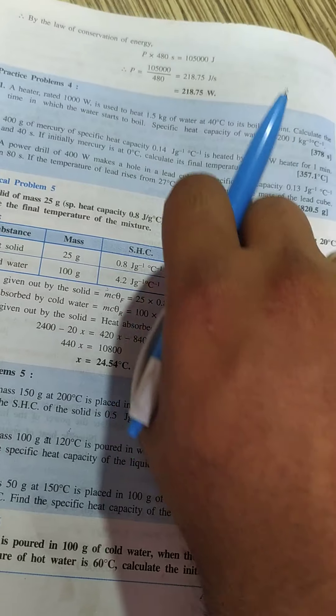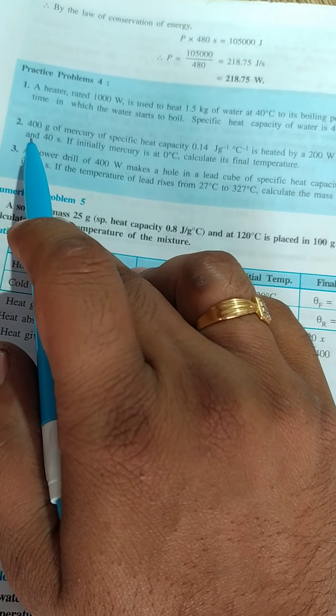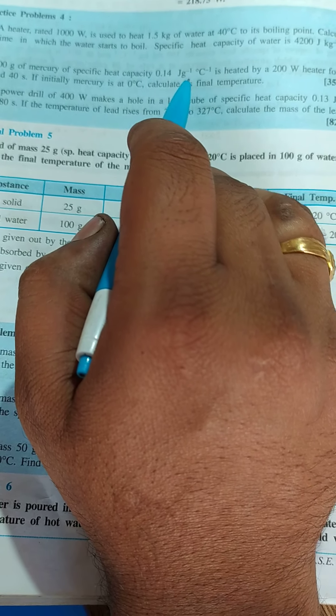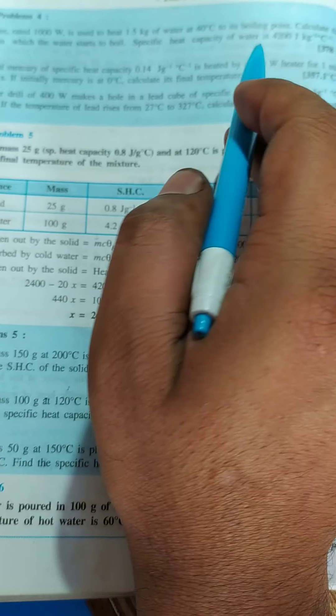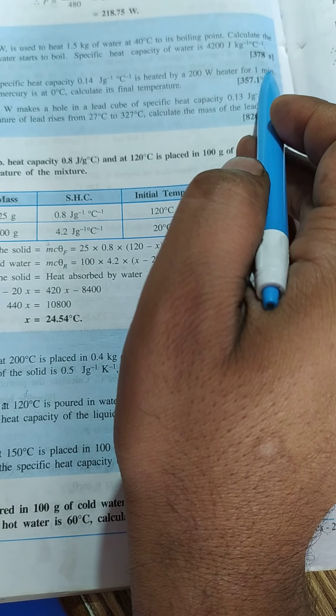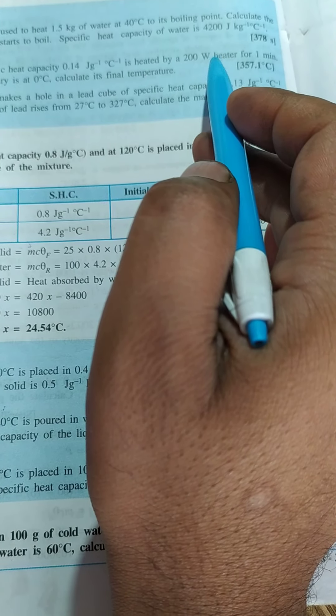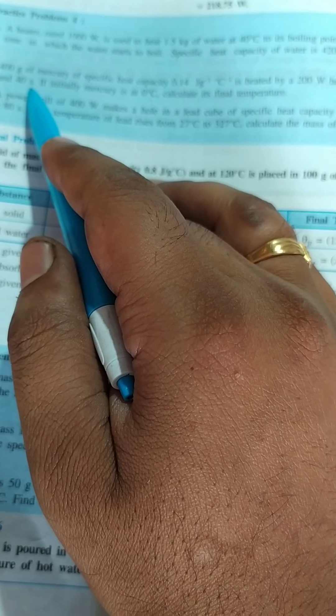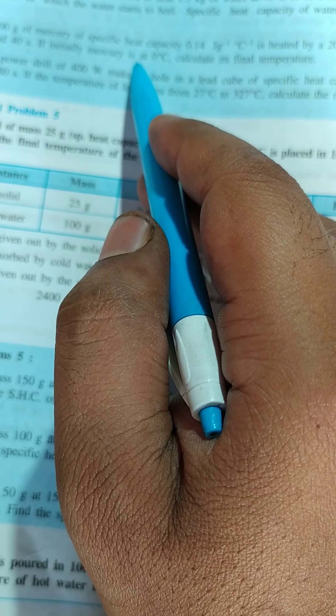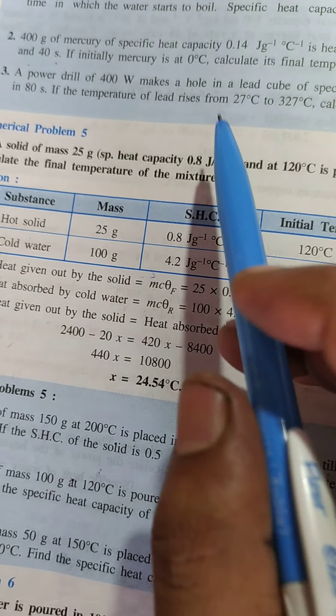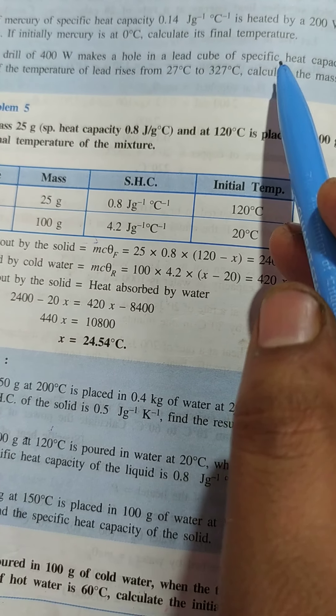Let us do another problem, the second one or the practice problem 4. It is given that 400 gram of mercury of specific capacity 0.14 joules per gram degree centigrade is heated by 200 watt heater for 1 minute and 40 seconds. If initially mercury is at 0 degree centigrade, calculate its final temperature.